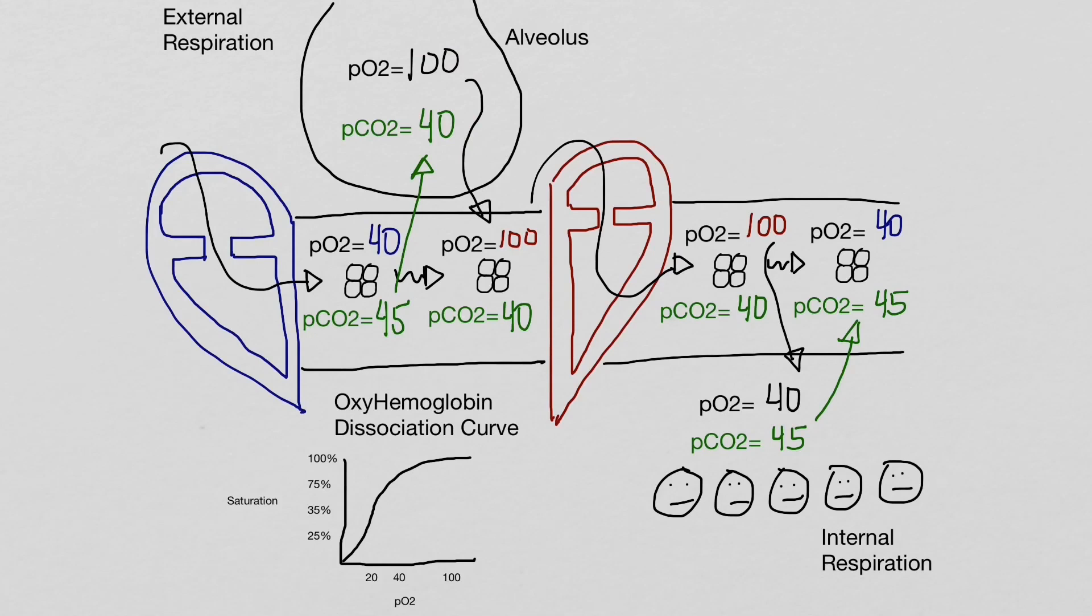To understand how much oxygen is actually being delivered, we need to look at the oxyhemoglobin dissociation curve. This curve shows the affinity hemoglobin has for oxygen based upon the partial pressure of oxygen.